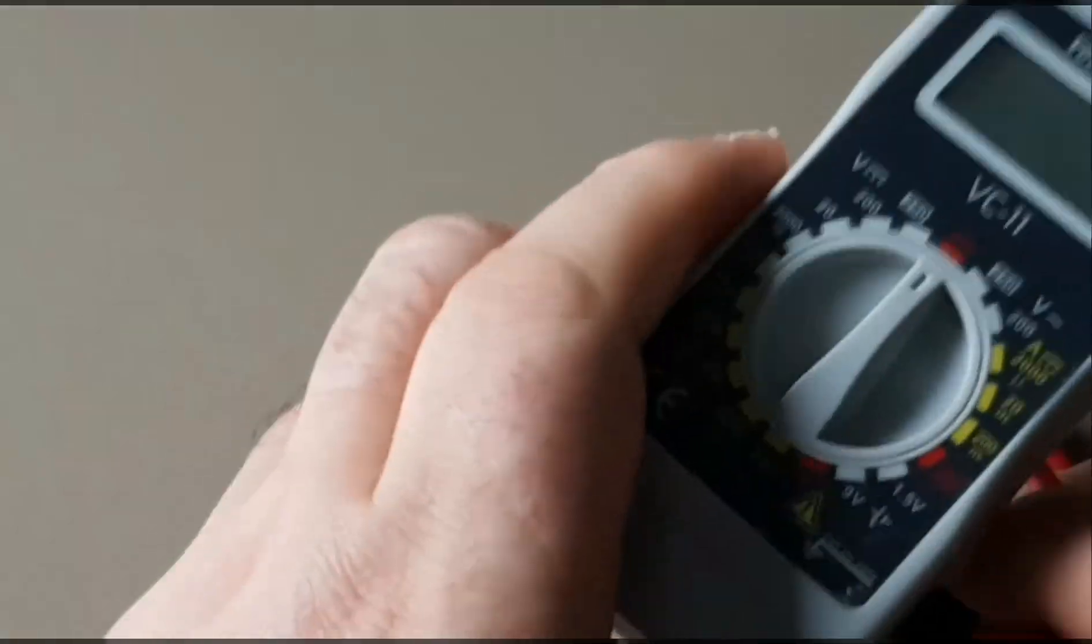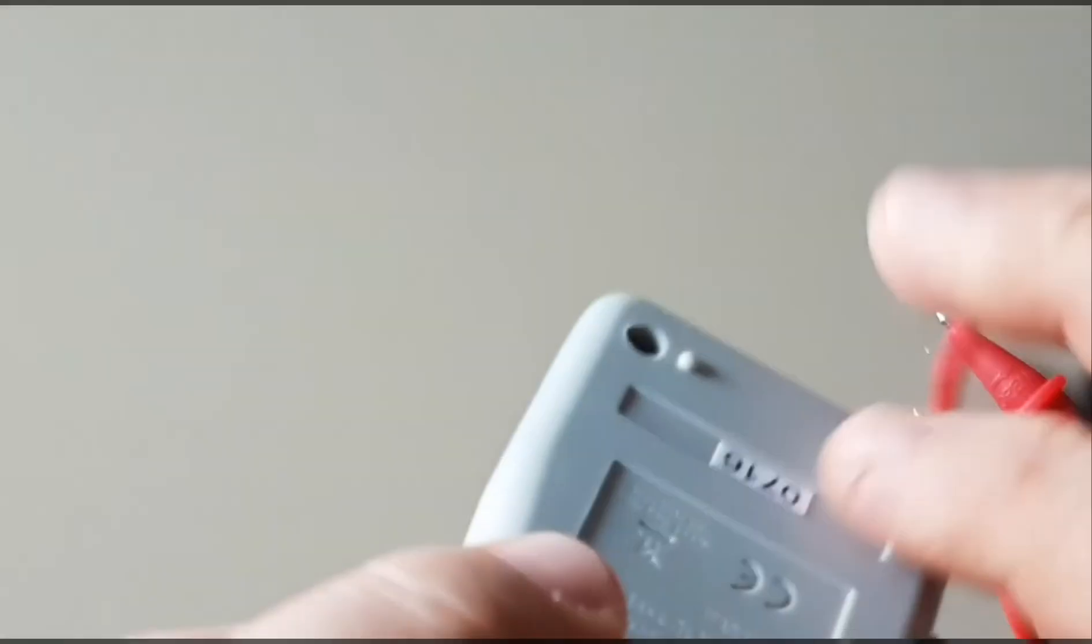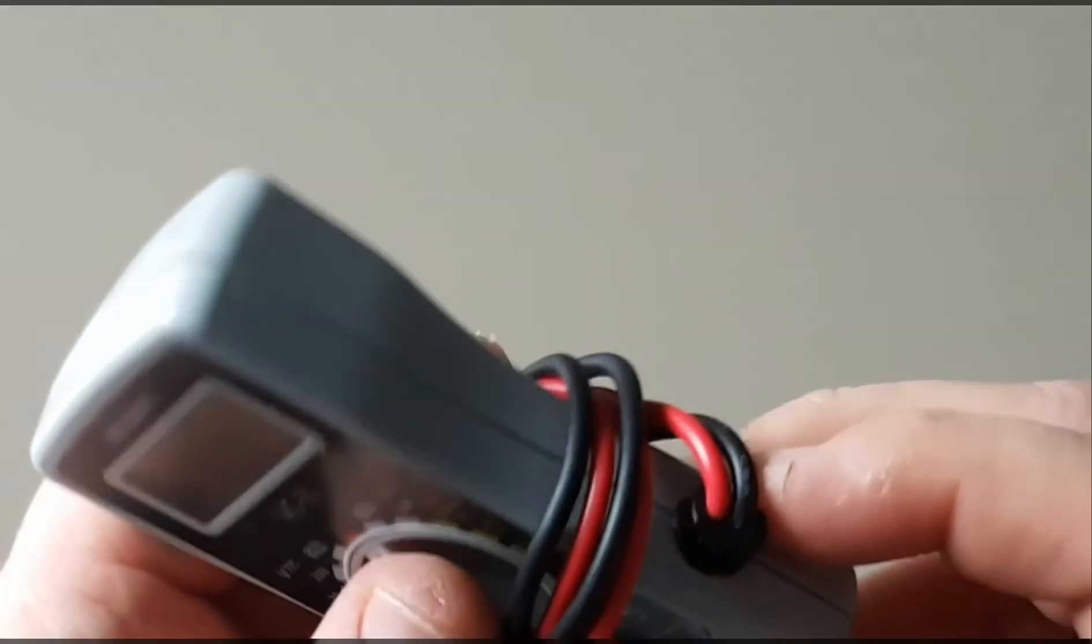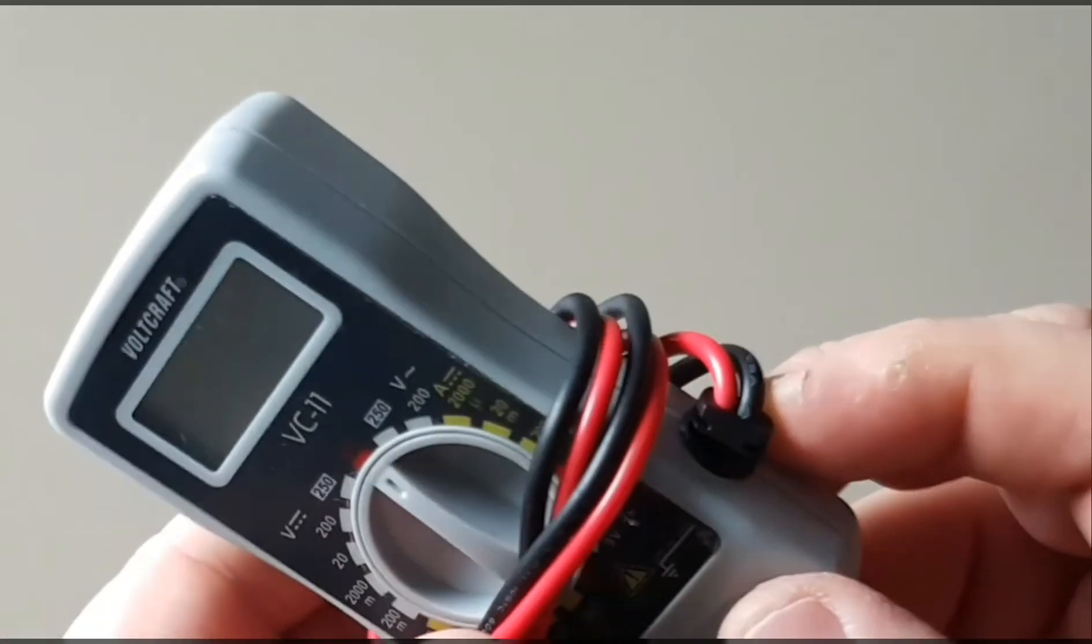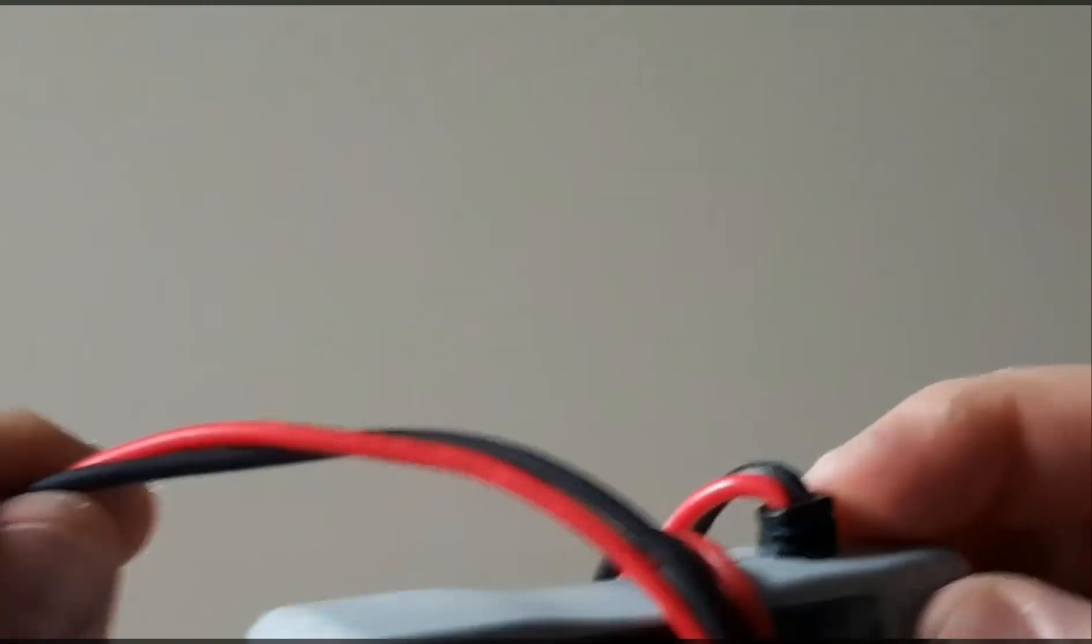Now with all of the multimeters that are in this size category, this one ships with the leads attached. That can be good and bad because there's no separate case with the VC11, you have to end up winding the leads around the meter. This can cause some excessive wear on the probe ends at some point down the road.